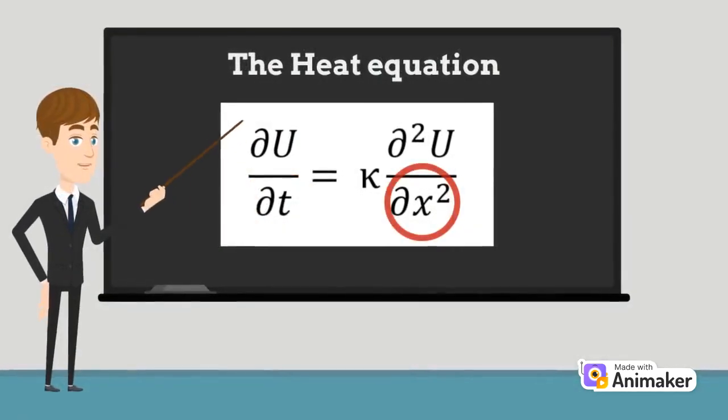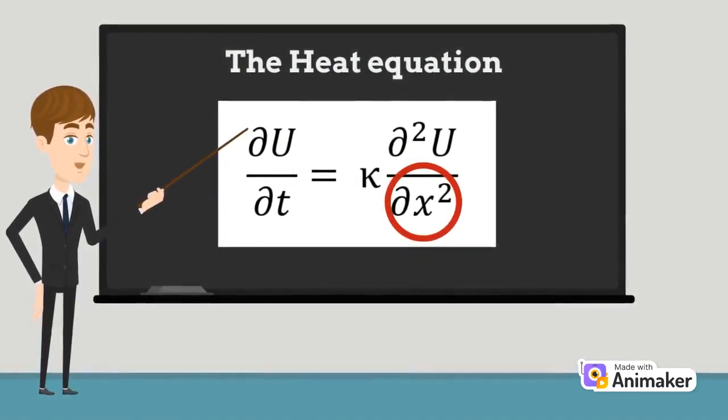x represents the spatial position of the point of interest and shows the spatial variability of the temperature.